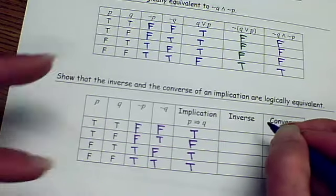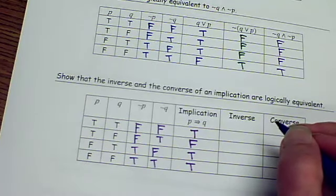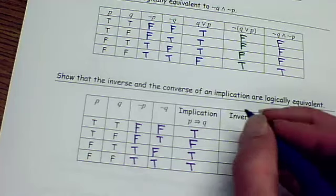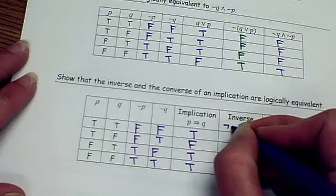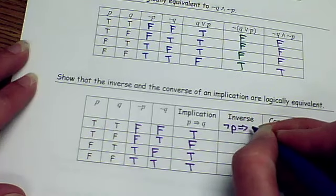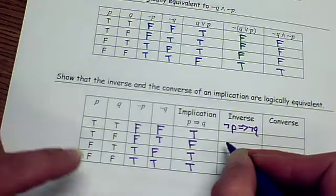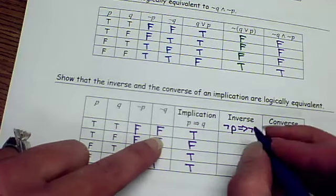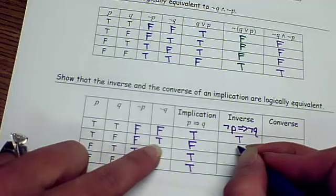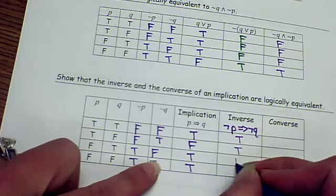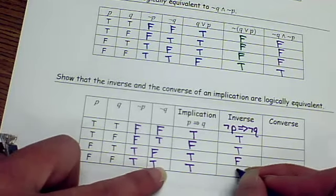The inverse. What was the inverse again? The inverse is when you take your original and you negate it. So we're going to negate it. False then false is okay. False then true is okay. True then false is not. True, true is okay.